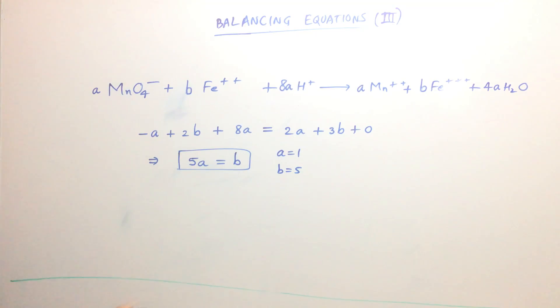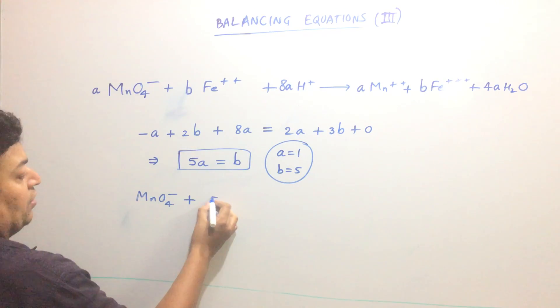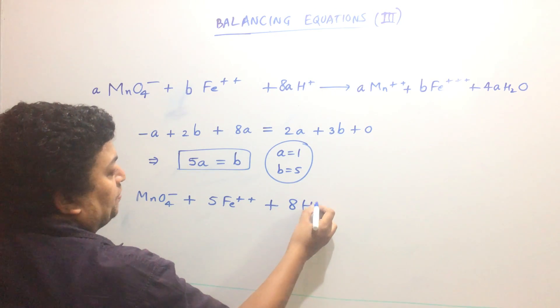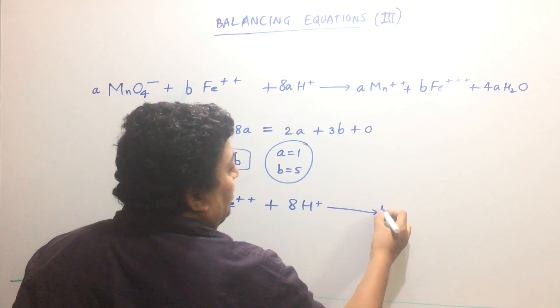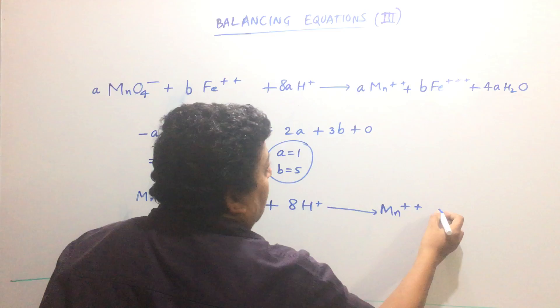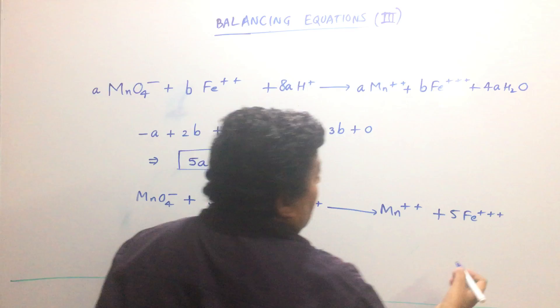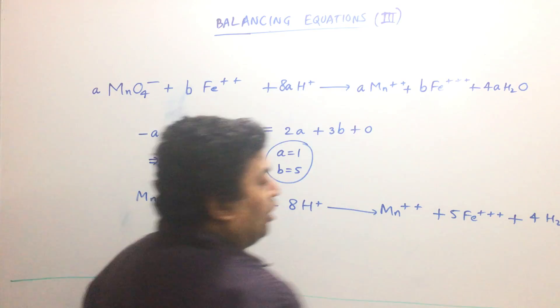Now I can substitute A and B values in the original equation. So it becomes MnO4- plus 5Fe2+ plus 8H+ equals Mn2+ plus 5Fe3+ plus 4H2O. Now we will check.